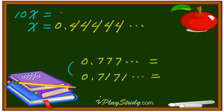What about 10 times of this one? That means, that's right. This is gonna be 4.44444, that's right, forever. Just like this one.